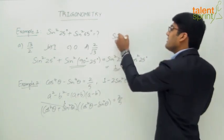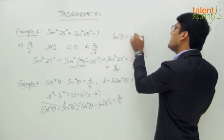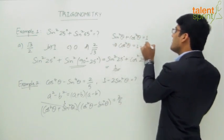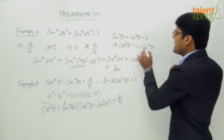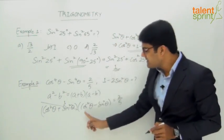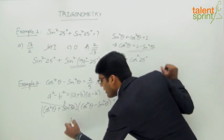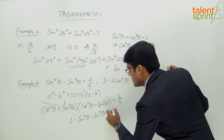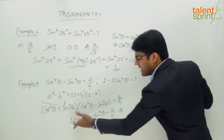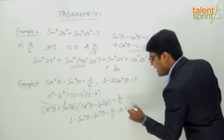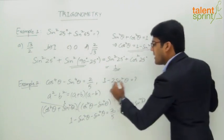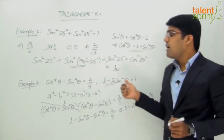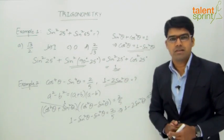Using the same identity sin²θ + cos²θ = 1, we can say cos²θ = 1 - sin²θ. Let us replace cos²θ with 1 - sin²θ. We get: 1 - sin²θ - sin²θ = 2/5, which simplifies to 1 - 2sin²θ = 2/5. That is exactly what the question asks for, so the answer is 2/5.